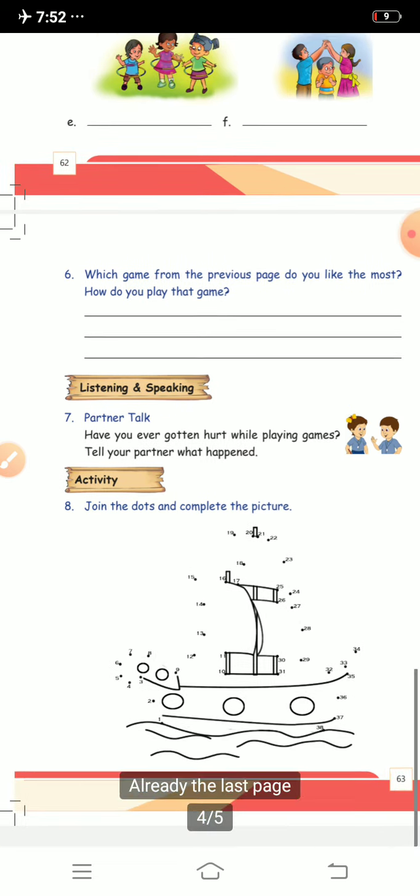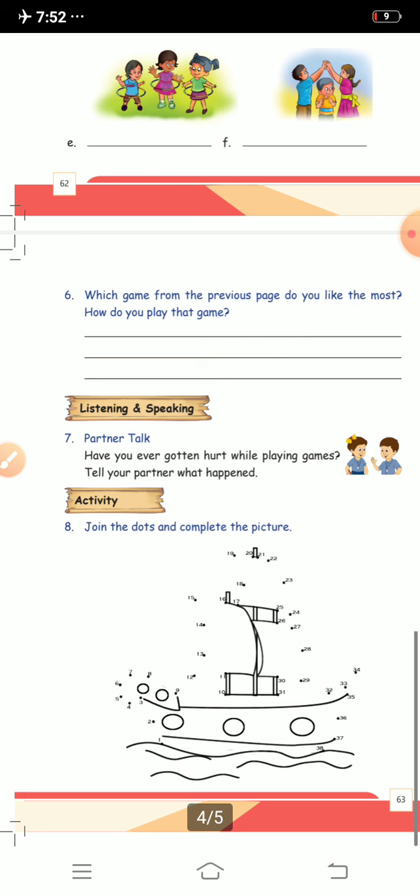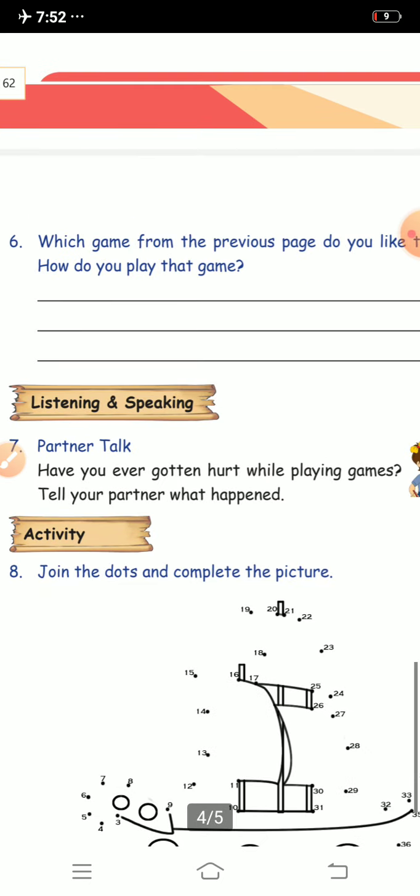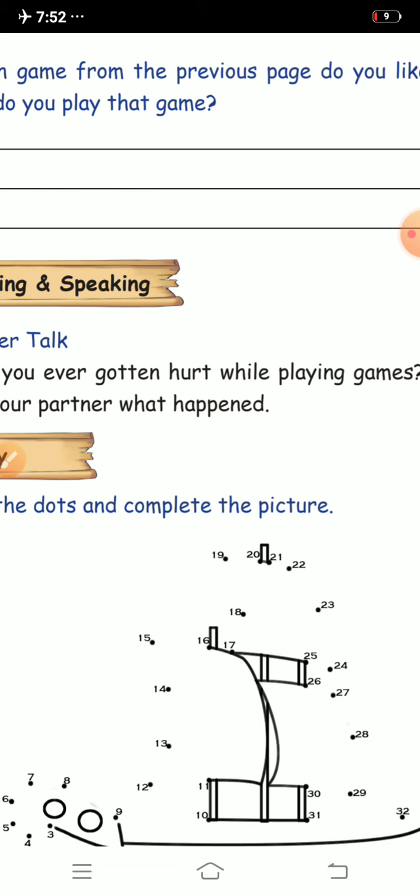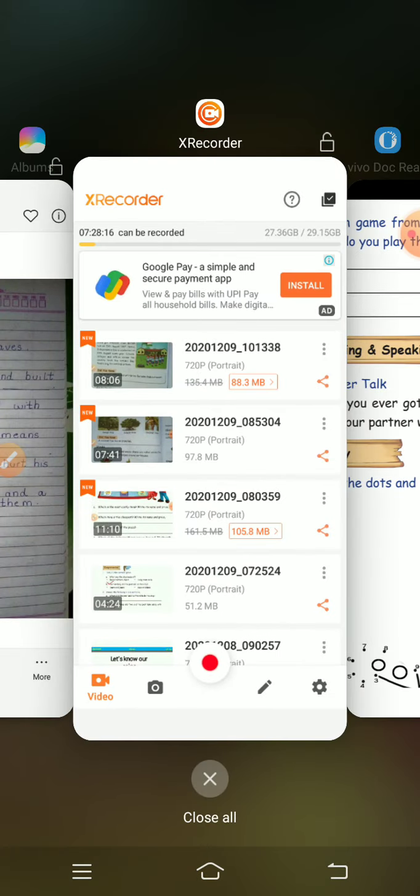Question eight is: join the dots and complete the picture. If you join the dots like one with two, three, four, and so on, then you will get a picture. You have to do this.